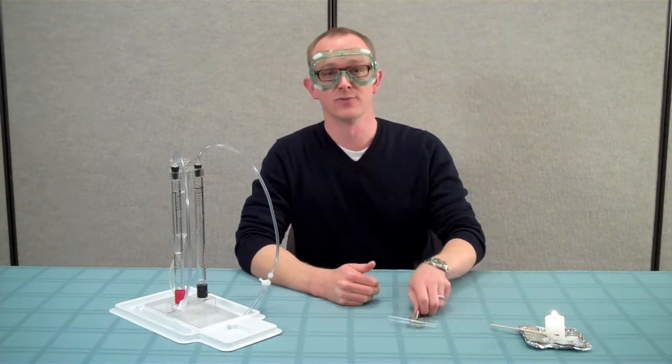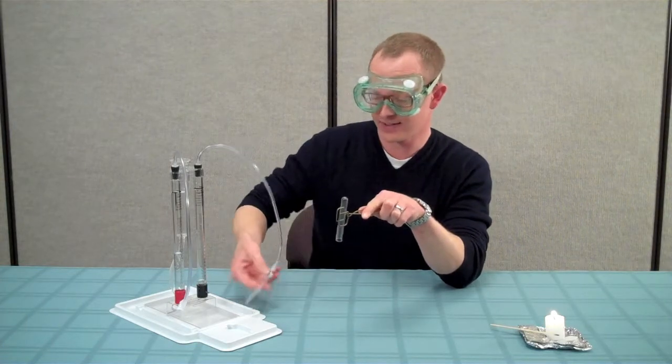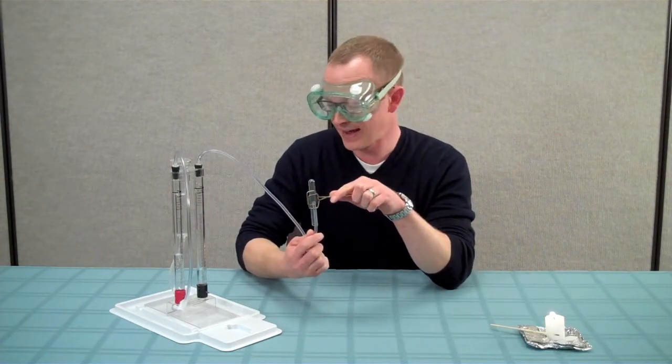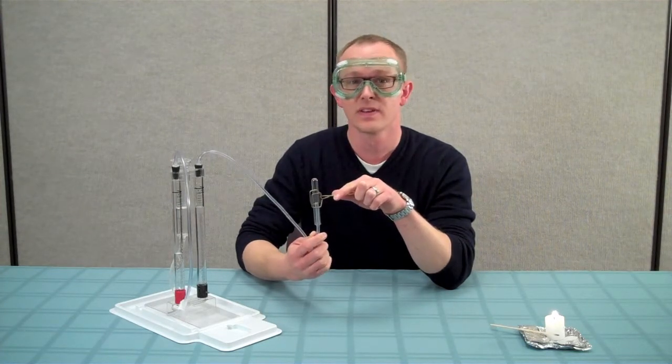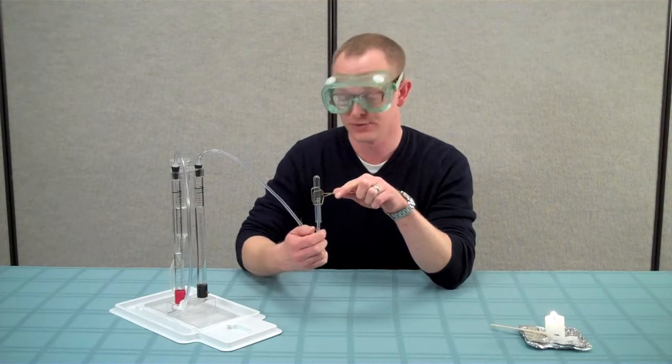First, take an inverted test tube and insert the open end of the gas supply tube into the mouth of the test tube. Open the valve, which will release the gas into the test tube. Leave the valve open until most of the gas has exited the storage column, and then close it.